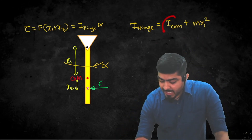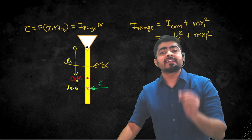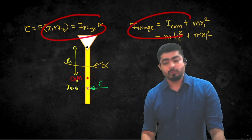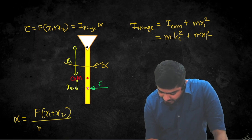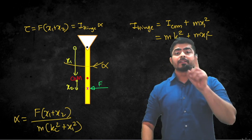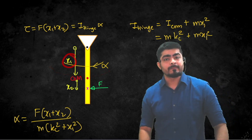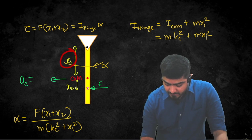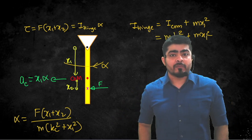Using the radius of gyration, I can write I_com as m·kc², where kc is the radius of gyration about the center of mass. So the moment of inertia about the hinge becomes m·kc² + m·x1². From the torque equation, alpha equals F·(x1 + x2) divided by m·(kc² + x1²). Since the center of mass undergoes circular motion with radius x1, the acceleration of the center of mass is x1 times alpha.